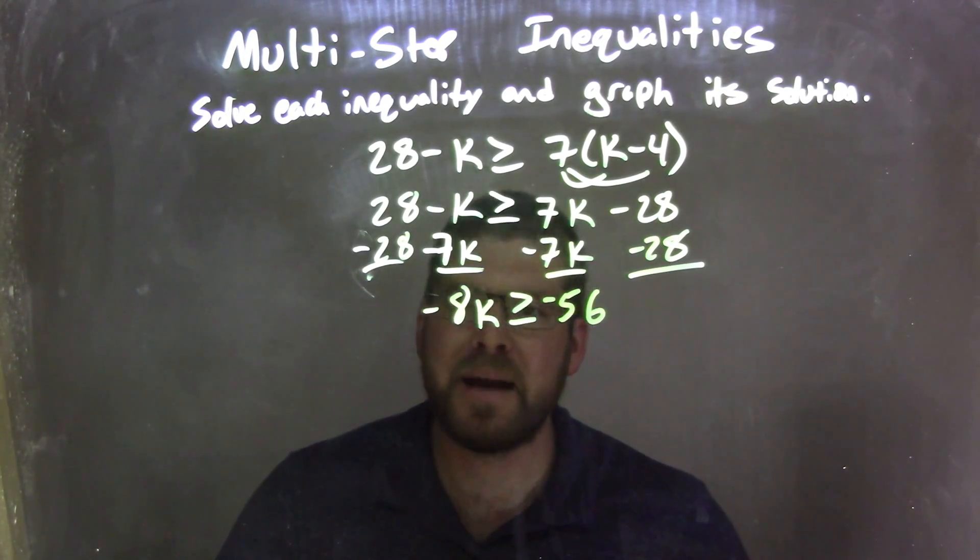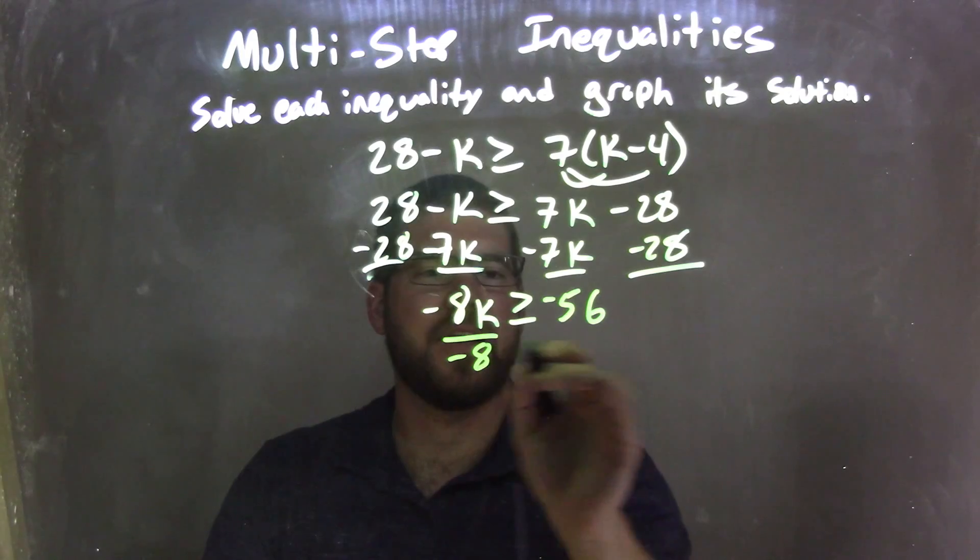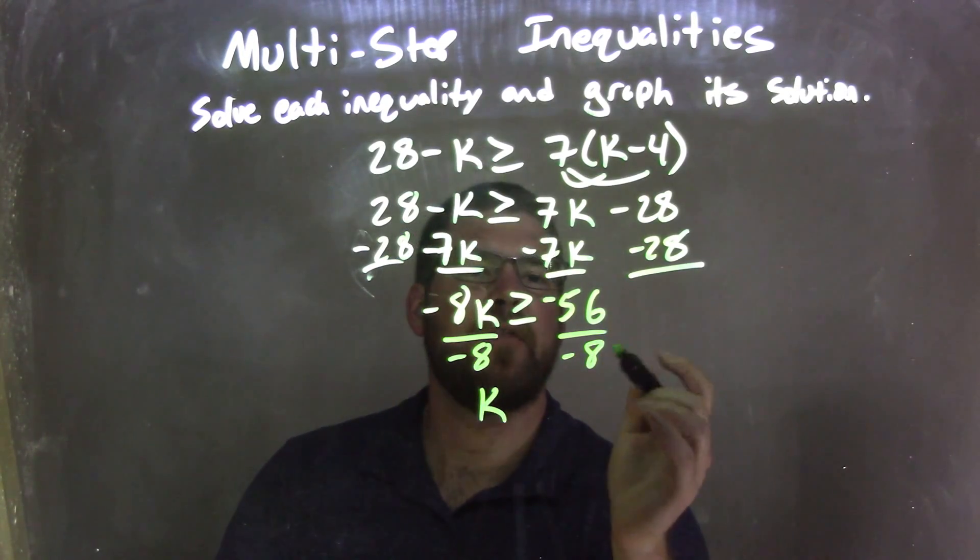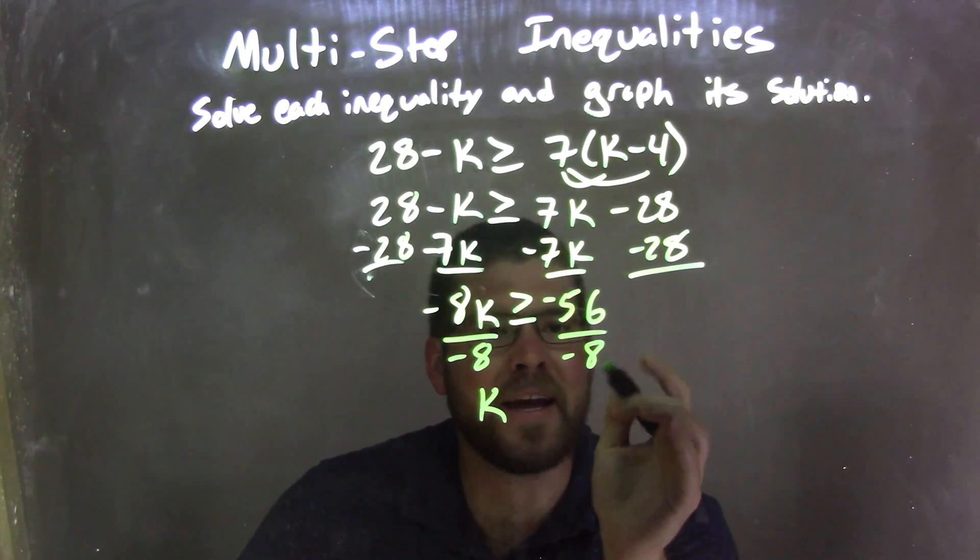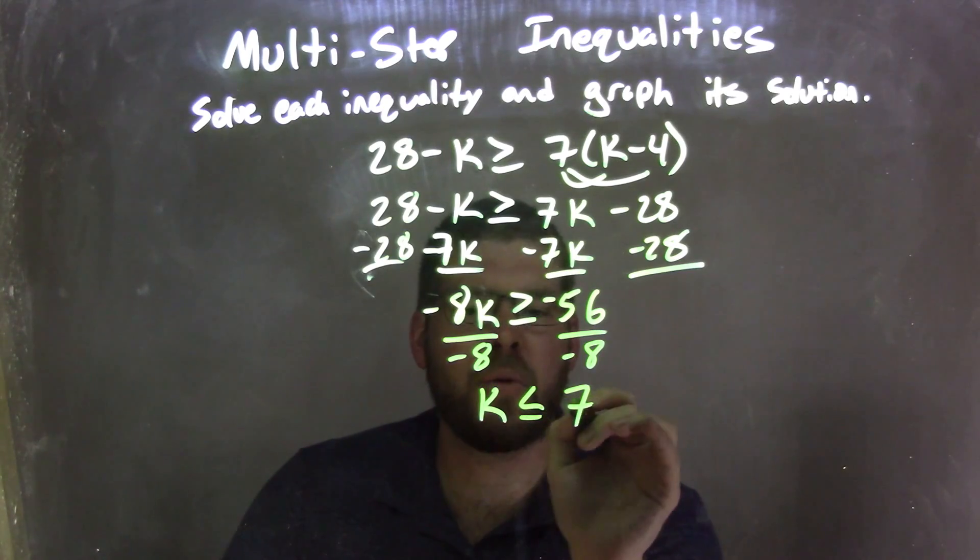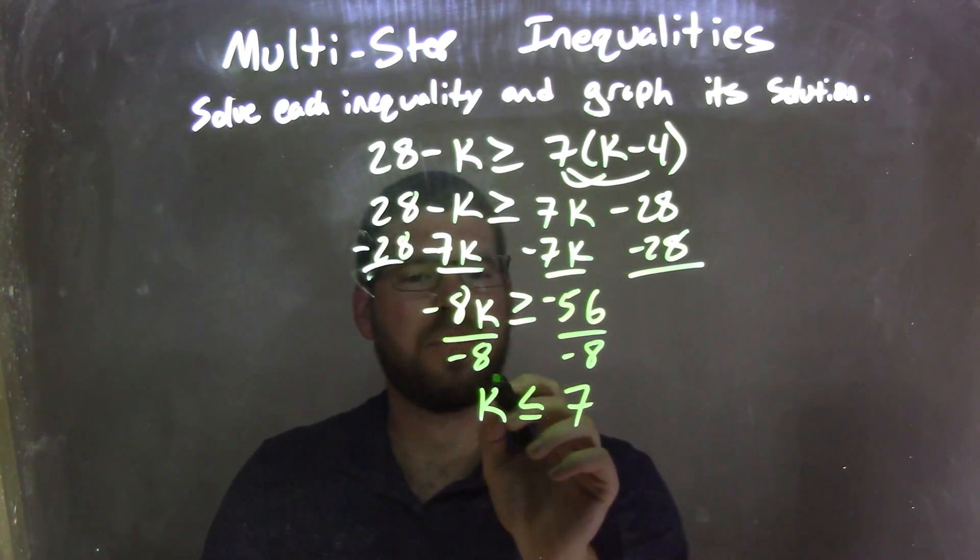Now we need to divide by negative 8 to both sides to get k by itself. Negative 56 divided by negative 8 is a positive 7. And since I divided by a negative over the inequality, I flip that inequality from a greater than or equal to sign to a less than or equal to sign.